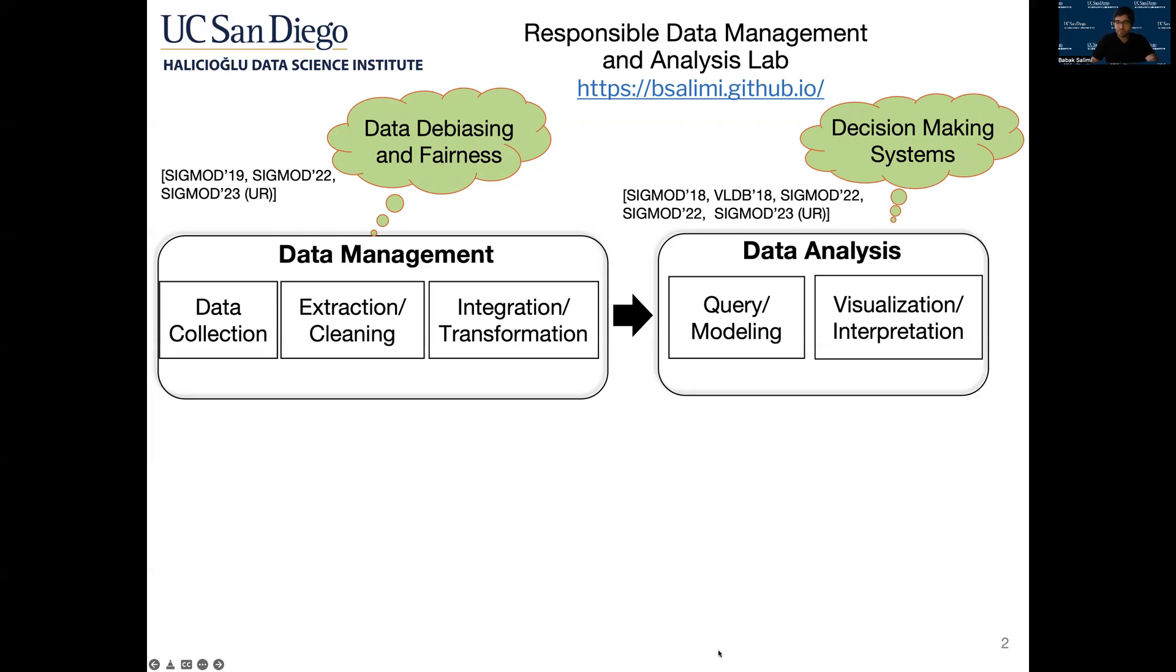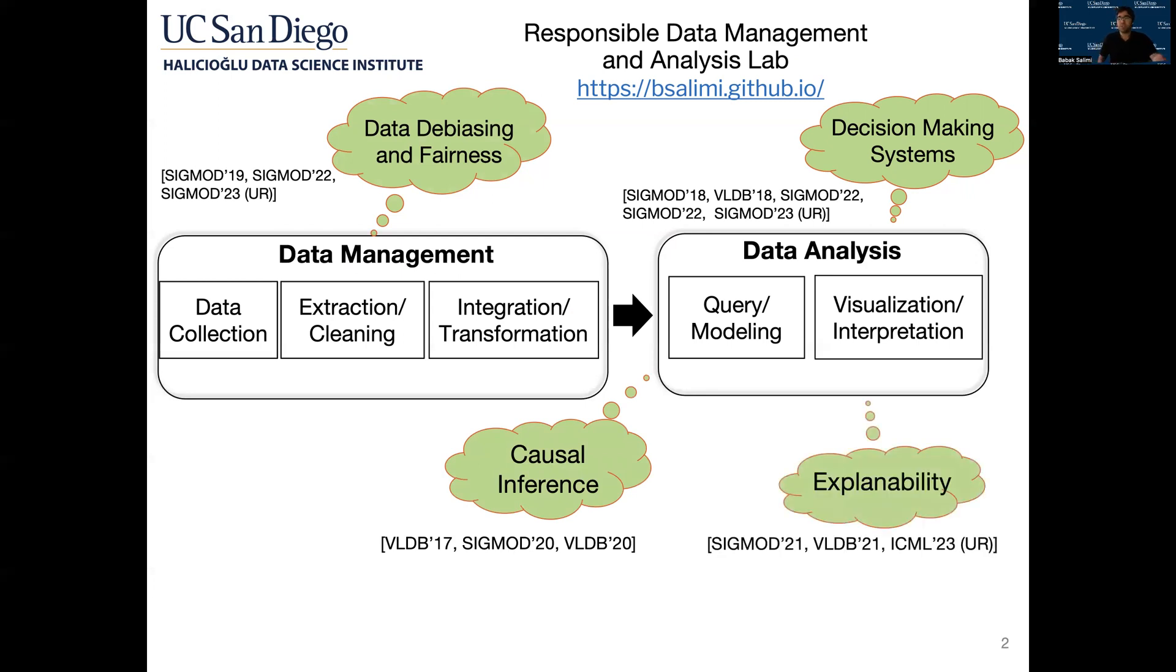In addition to data management, my research is grounded in causal inference since I believe causal inference can provide a principled way for modeling various types of data biases. But we also contribute to causal inference itself by developing methods for causal inference from complex relational data. Finally, we believe generating explanations is crucial for responsible data science and for understanding data and algorithms, and we made several contributions in this space that we're going to cover some of them today in this tutorial.